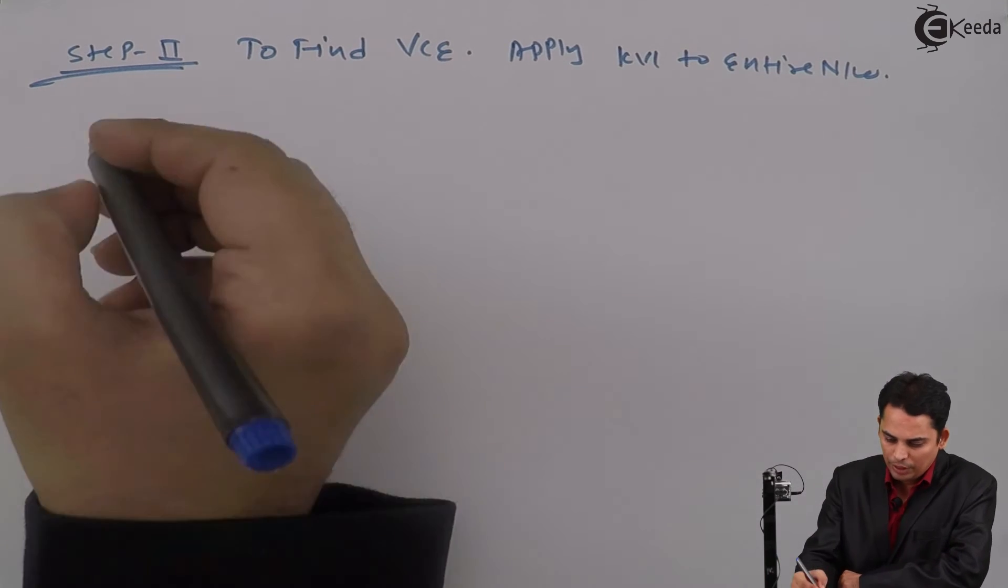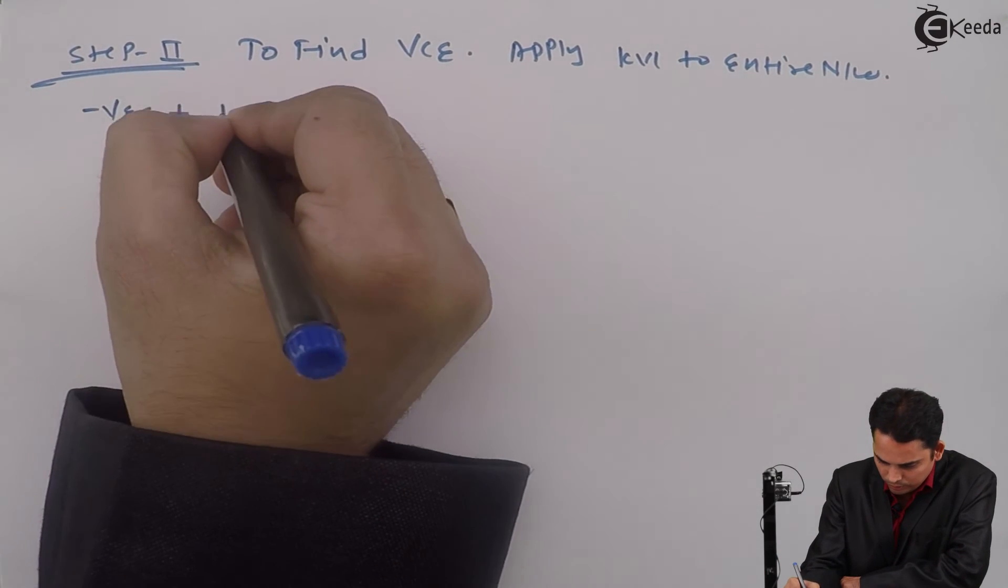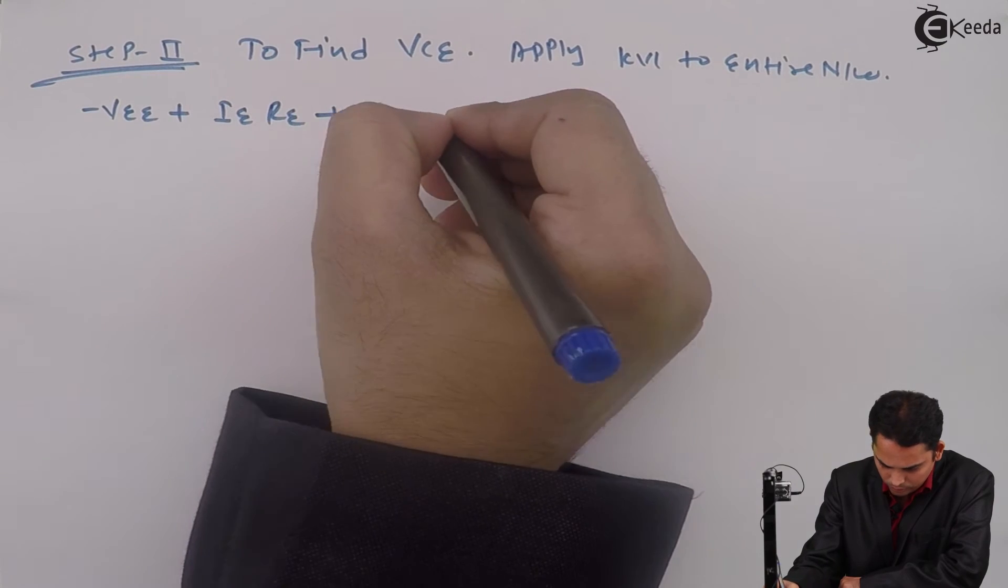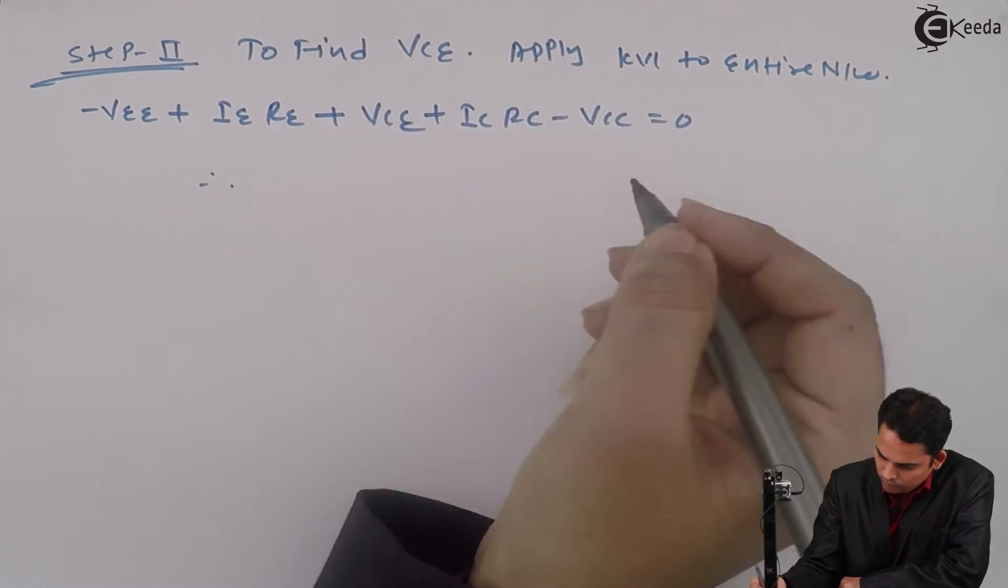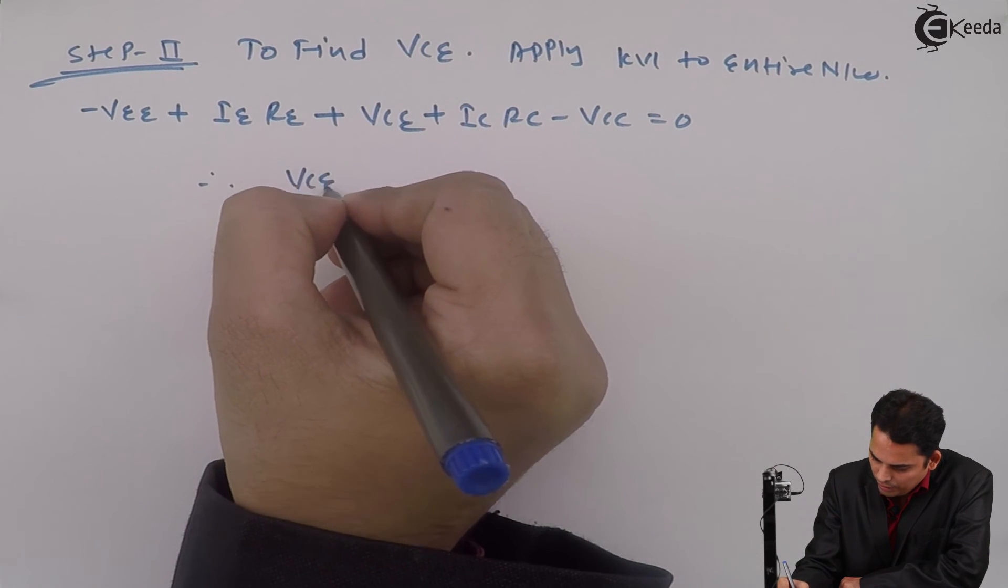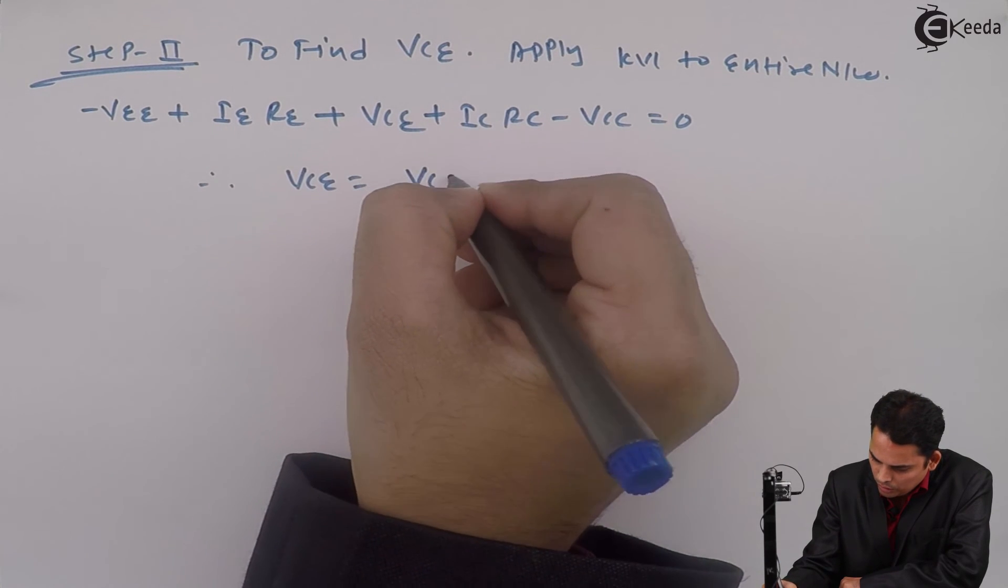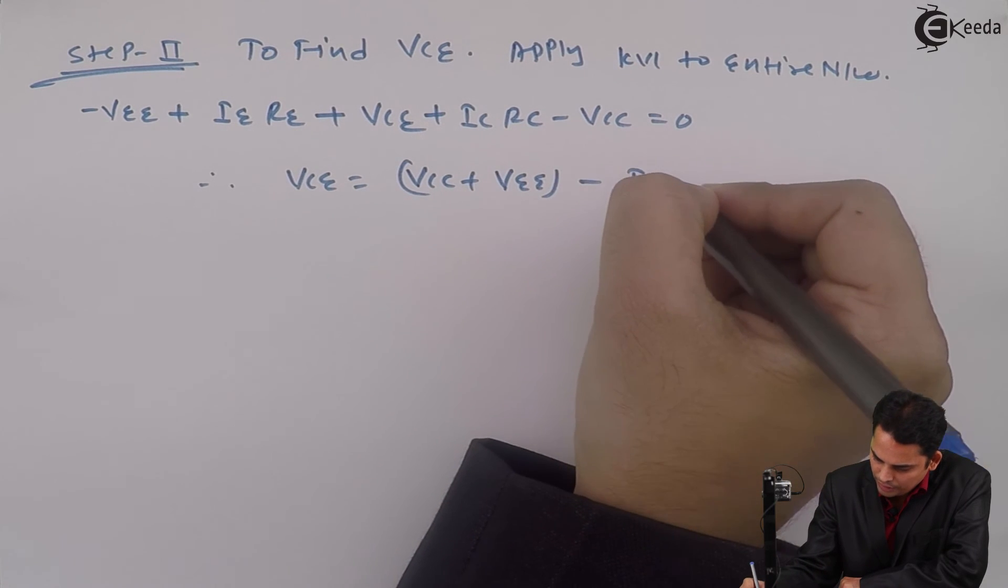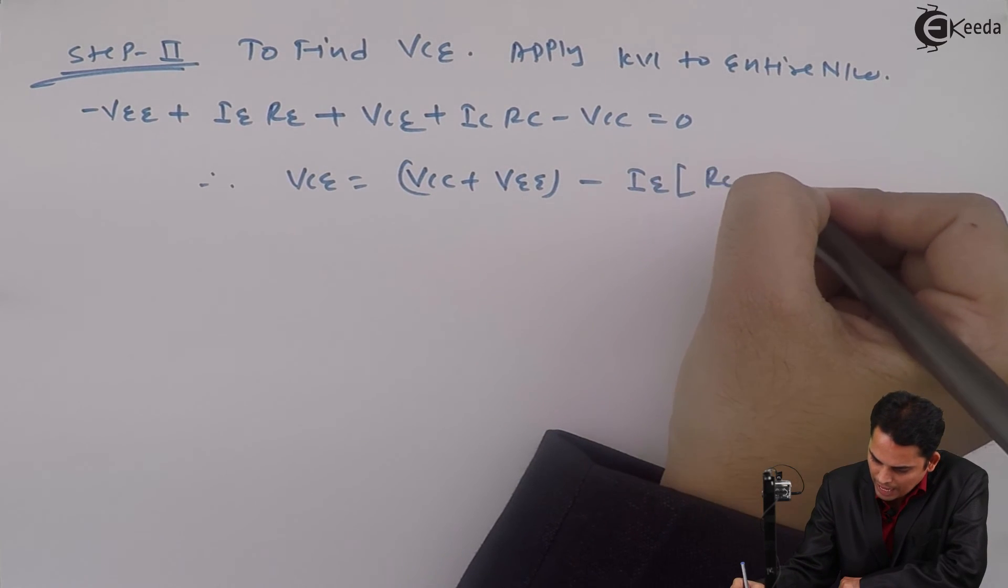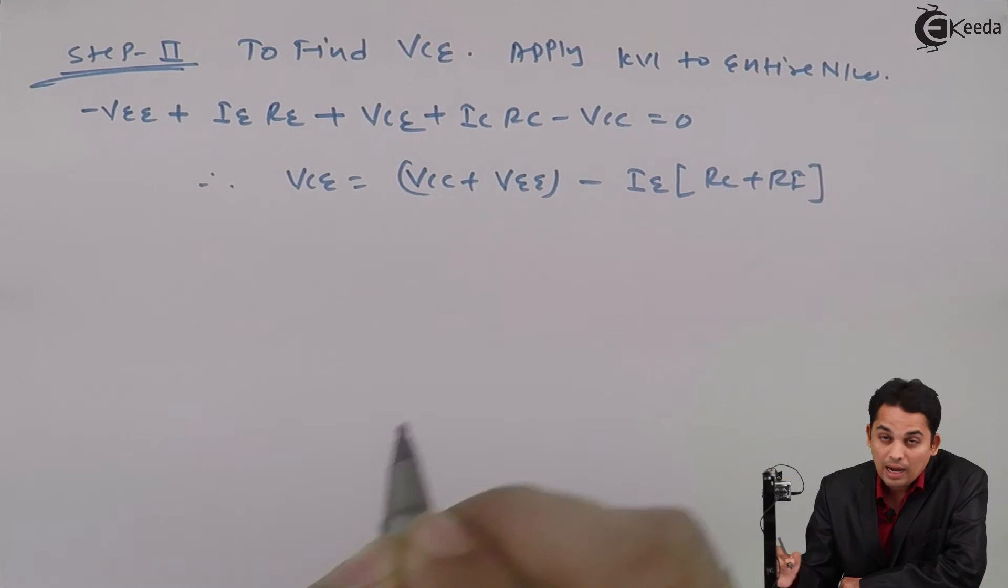Hence the equation will become: VCE is equal to VCC plus VEE minus IE into bracket RC plus RE.